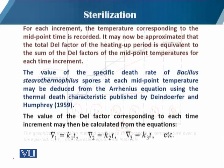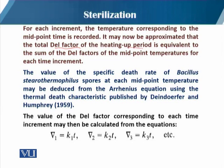For each increment, the temperature corresponding to the midpoint time is recorded. It may then be approximated that the total DEL factor of the heat-up period is equivalent to the sum of the DEL factors at the midpoint temperature for each time increment. The specific death rate used here is for Bacillus stearothermophilus spores, as seen in our previous module, and the DEL factor for these spores at each midpoint temperature may be deduced from the Arrhenius equation using thermal death characteristics published by Richards and Humphrey in 1959.